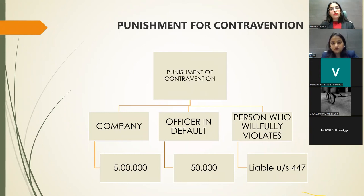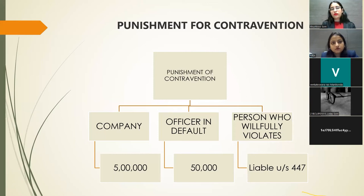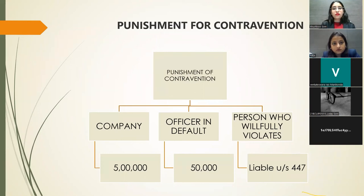A person who willfully violates the charge provisions — for example, by suppressing material information or providing false information — is liable under Section 447, which is the section dealing with fraud. It is well established that a person who willfully suppresses material information or does not provide correct and true information is liable under Section 447.